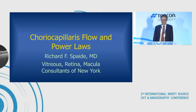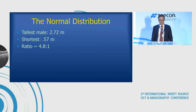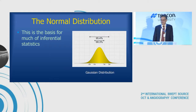So it's a little refresher. The first thing I want to talk about is normal distribution. If you look at the tallest male ever recorded in human history, he was 2.72 meters, and the shortest was 0.57 meters. The ratio is 4.8 to 1, which isn't that big. Height plotted on a graph follows a Gaussian distribution, and 68% of whatever you're measuring is within one standard deviation, 95% within two standard deviations. A lot of our statistics in medicine — particularly inferential statistics — is based on this idea.